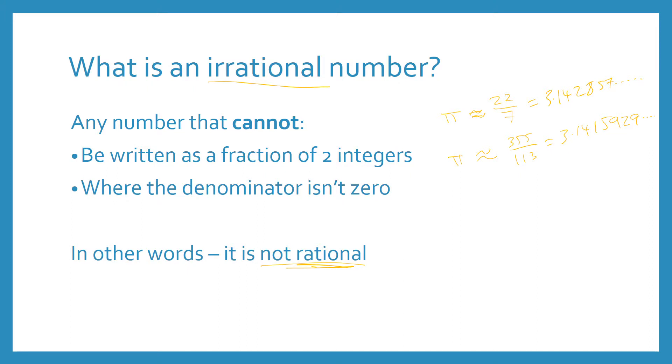And it's impossible for us to write pi as a fraction of two rational numbers. So pi is an example of an irrational number. Another number which is irrational, which you would have seen, is the square root of 2 or the square root of 3. Both of these numbers can't be written as a whole number on top of another whole number. So both of these numbers are irrational.